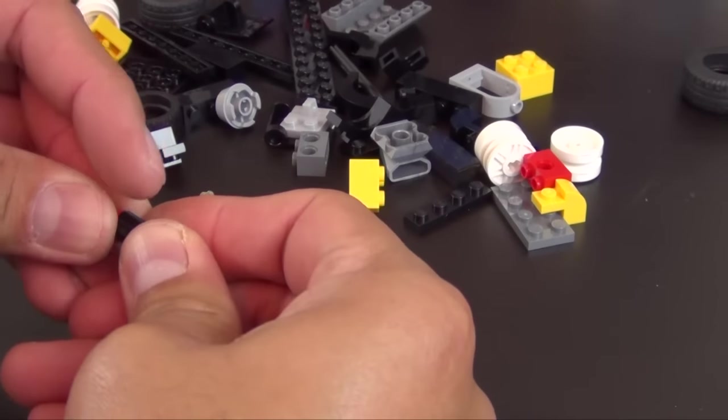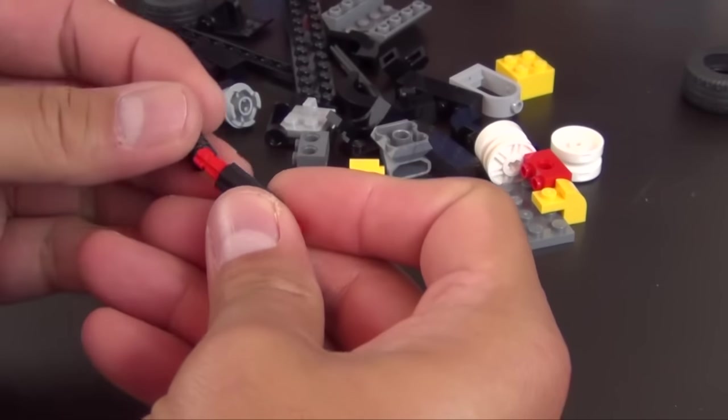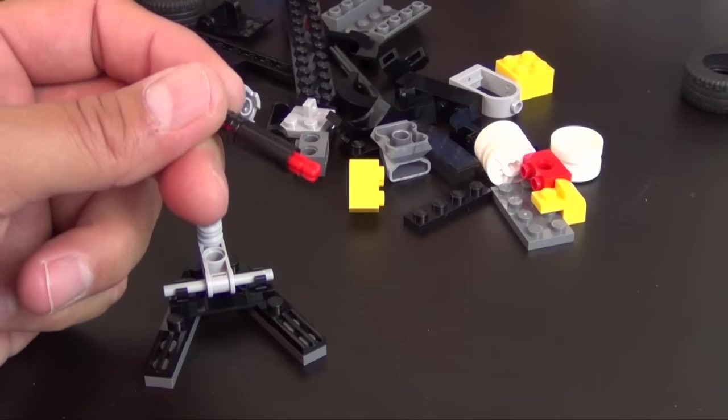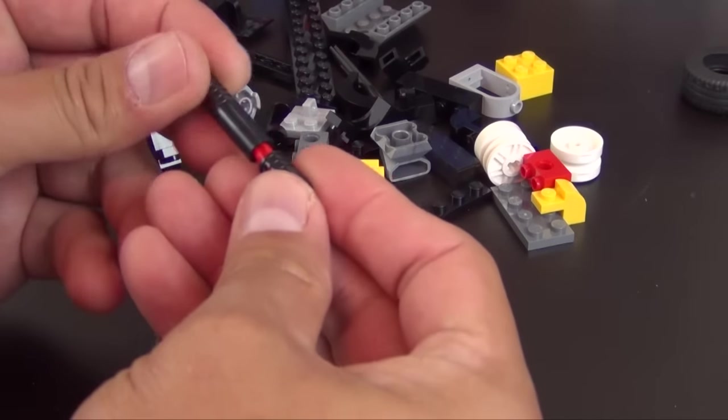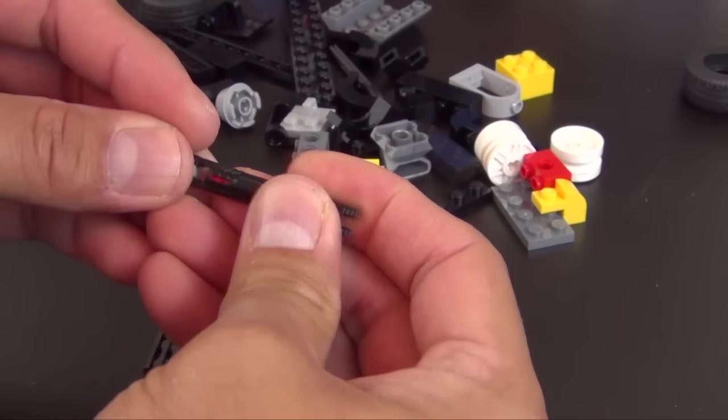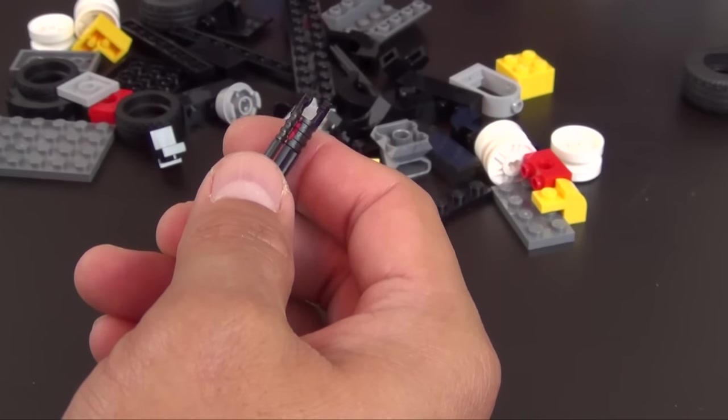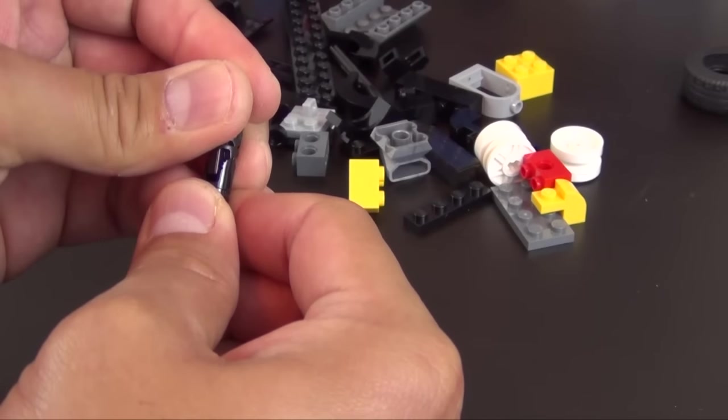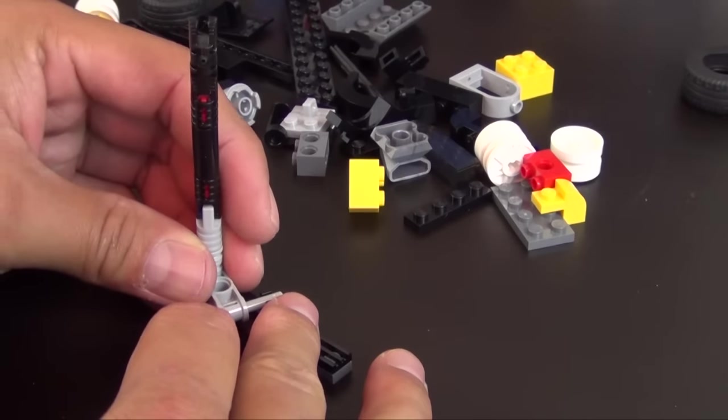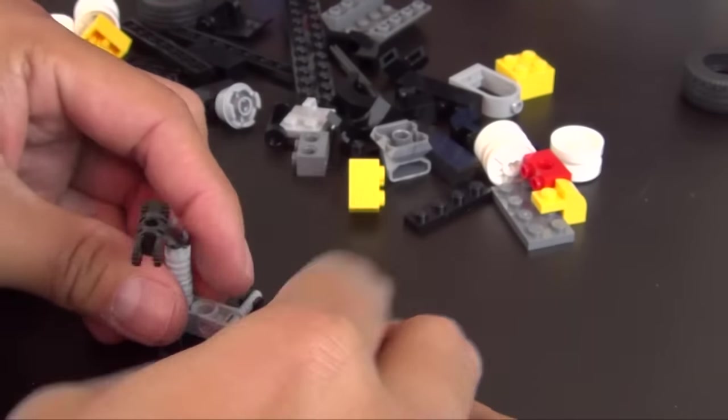We have an axle joiner with a couple axles and then two of these axle ends with click hinge type pieces. They're both oriented the same way.